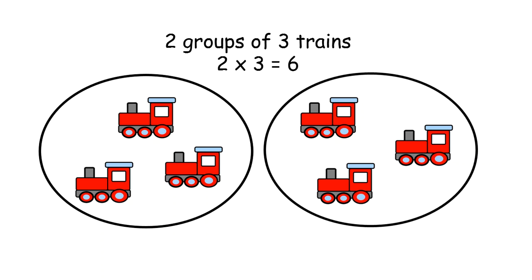Two groups of three trains can be represented in multiplication as two times three which is six because there are one, two, three on the left, four, five, six when you combine with the right.